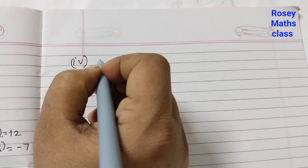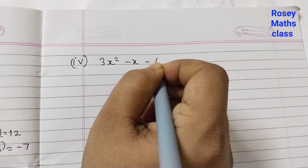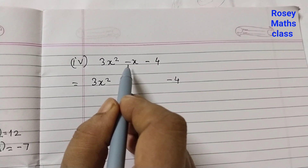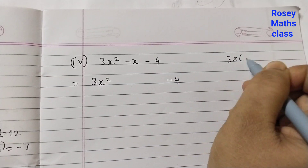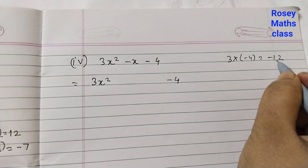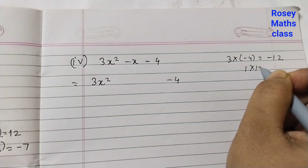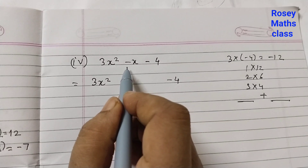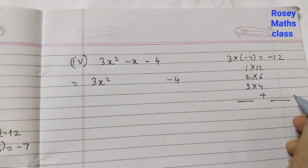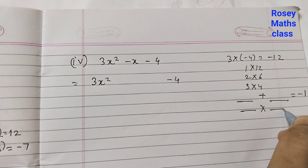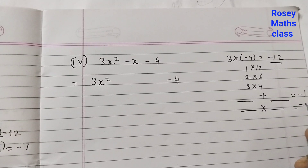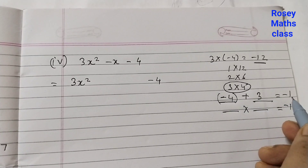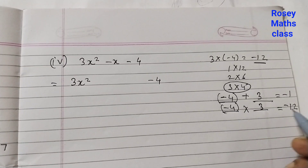The last one: 3x squared minus x minus 4. The first term and last term remain as they are. We need to split the middle term. So 3 into minus 4 is minus 12. Find out the factors of 12: 1 into 12, 2 into 6, 3 into 4. We need two terms that add up to minus 1 and whose product is minus 12. We can take minus 4 plus 3 — minus 4 plus 3 is minus 1, and minus 4 into 3 is minus 12.